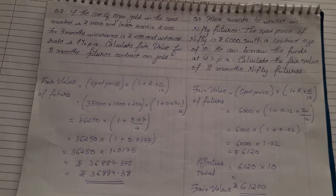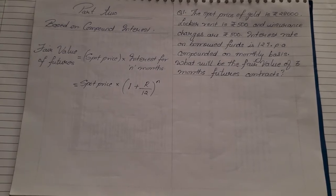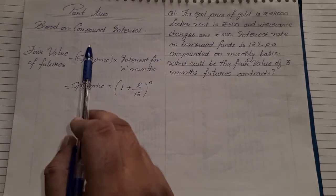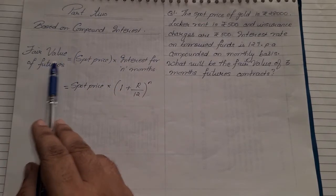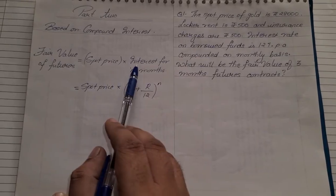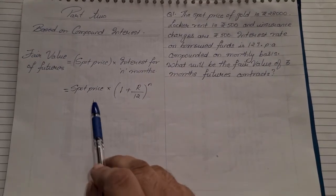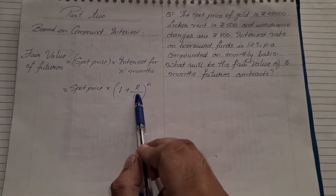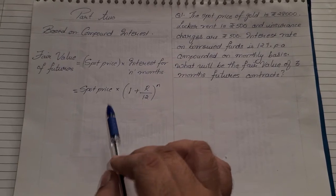Now we will solve the second method, which is based on compound interest, with a couple of examples to clear the entire concept. The formula for fair value of futures under compound interest is: spot price × (1 + r/12)^n. This is the key difference between simple interest and compound interest. Let us see how we use this in an actual sum.